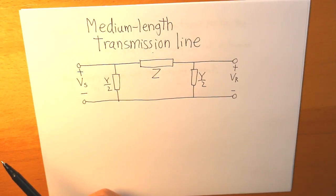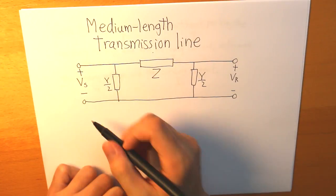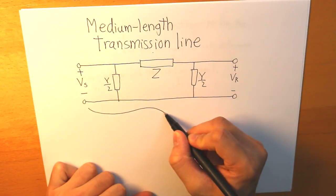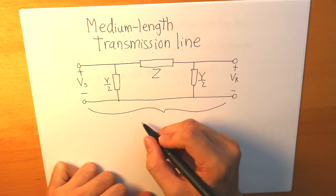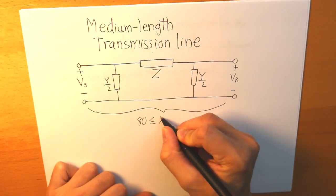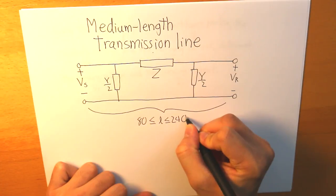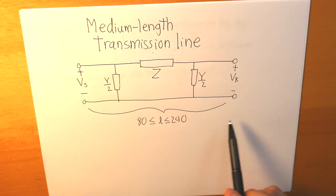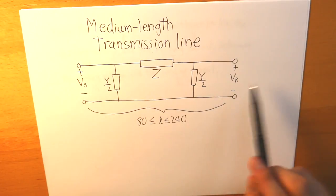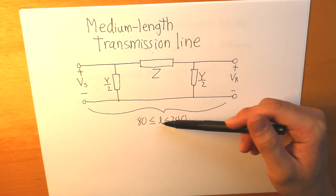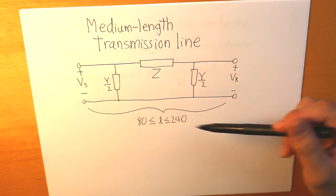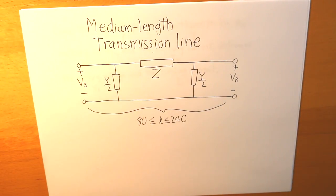Our medium length transmission line. For medium length, the range for that is simply between 80 to 240 kilometers. So between this range, from the Vs to the Vr, if the length is between 80 and 240, that's considered a medium length transmission line, therefore we have to consider these two bars.